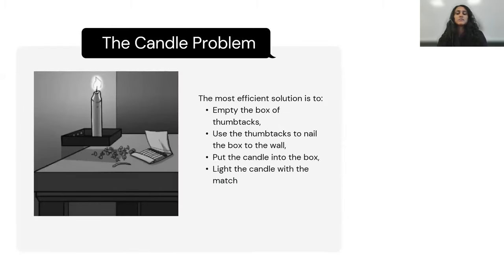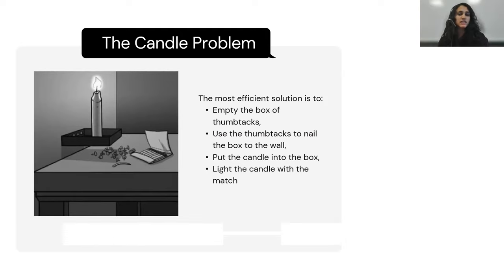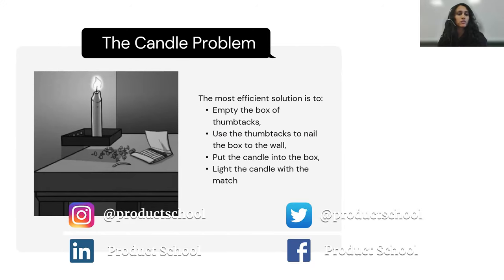The best way to achieve the goal of attaching the candle to the wall such that wax won't drip on the table is by using the box itself as the foundation. Basically, empty the box of the tags and then attach it to the wall to form the base where you put the candle on top of.